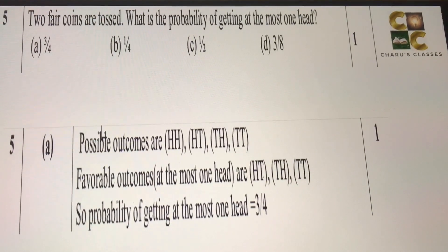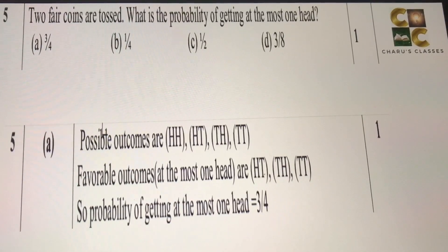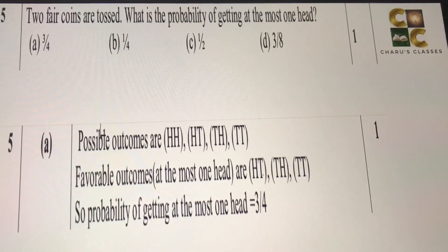So that possibility is there in HT, TH, and TT. That means, three out of four is the probability of getting at most one head.